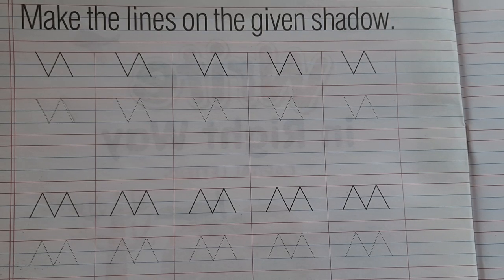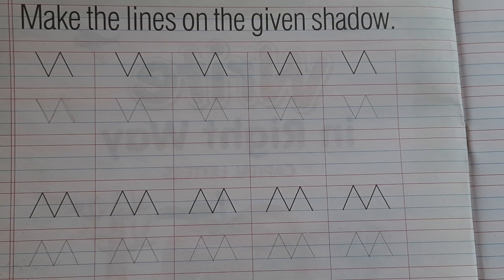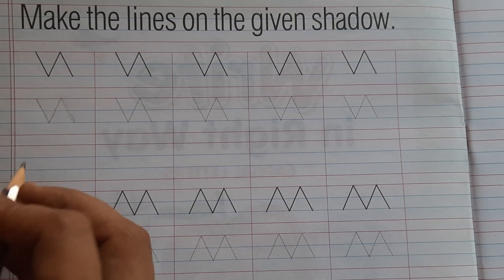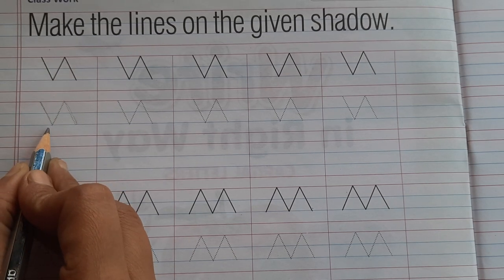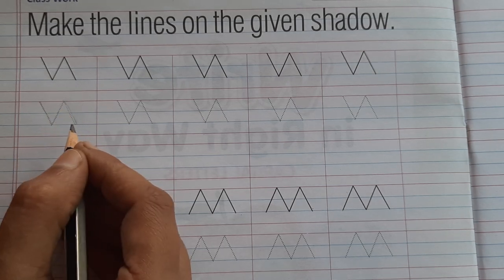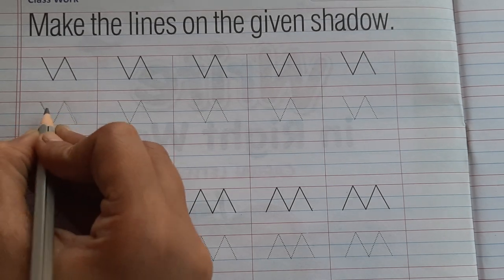Hello students, welcome to Blooming Rose Academy online classes. Today we will study to make different kinds of lines with the help of given shadows for nursery class. So let's start. Join these dotted dots with the help of a pencil.